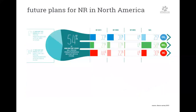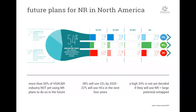Regarding future plans for natural refrigerants, we asked those currently not using them if they plan to do so. 54% of respondents are not currently using natural refrigerants but plan to use them in the future — more than half. The most promising developments are expected for CO2 by 2020, with hydrocarbons also expected to be adopted in the next few years. A third of respondents were not yet decided, so there is a large untapped potential.